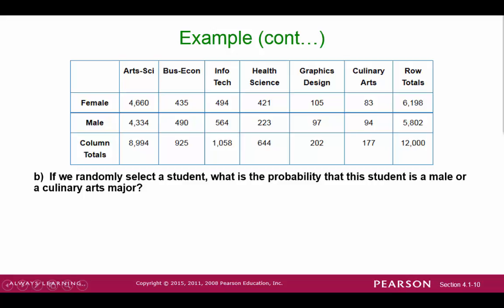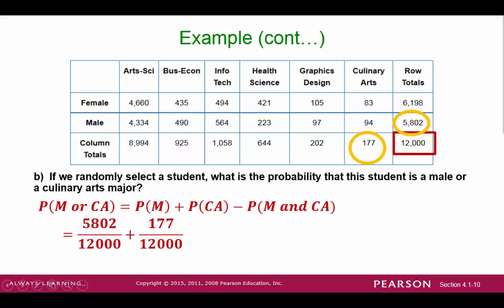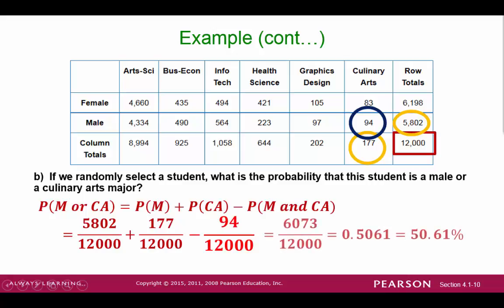Let's look at the next example: the probability that we select a male or a culinary arts major. In this case, these events are not disjoint, so there's an overlap we need to subtract out. The first two probabilities are found just like the first problem, but now we find that there are 94 students counted twice from the totals, so we need to subtract this out. After simple arithmetic, the result is about a 51% chance of selecting a male or a culinary arts major.